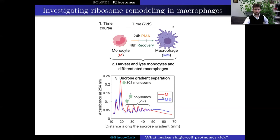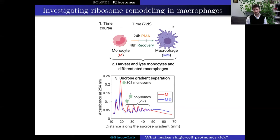As shown here at the bottom, sucrose gradient sedimentation is a classical technique that allows us to sediment different parts of the cell based on their size — how quickly they sediment in a sucrose gradient — and then analyze them downstream using mass spectrometry and other methods.